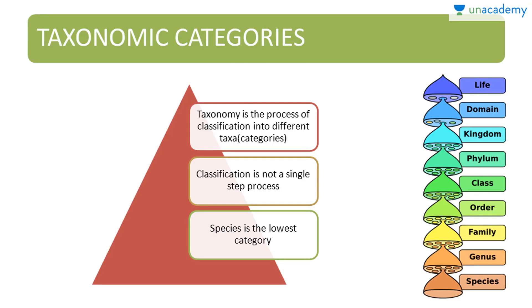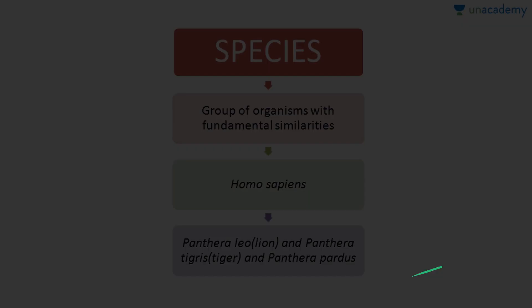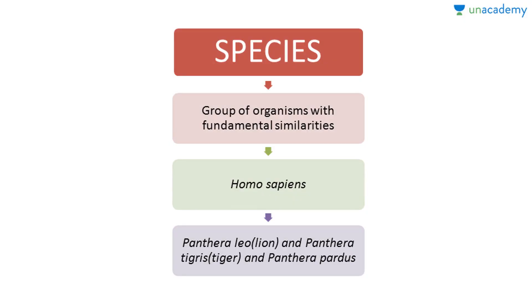Now we move on to taxonomical categories. Taxonomy is the process of classifying organisms into different taxa or categories. Classification is not a single-step process. Species is the lowest category, and then we move on to genus and so on. Species is a group of organisms with fundamental similarities — for example, in Homo sapiens, sapiens is the species.